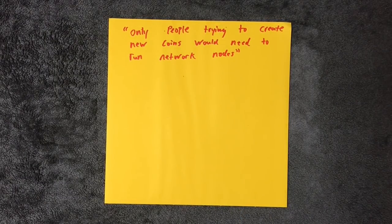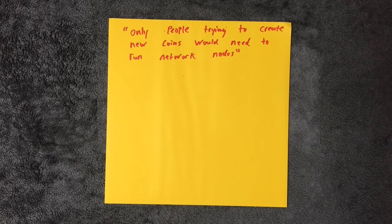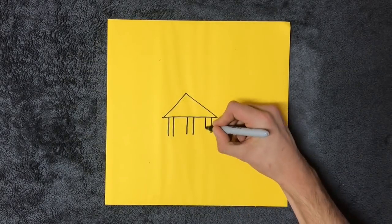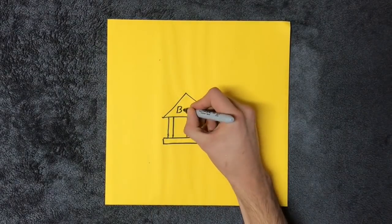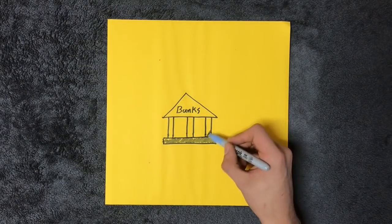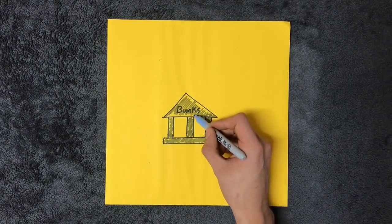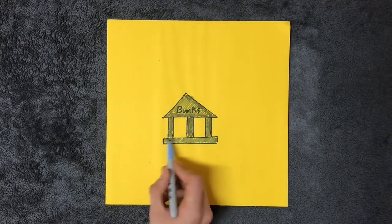People have been fed a lie that running these worthless nodes somehow does something good for the network. But why? One reason is that it gives the illusion of decentralization while contributing to the process of centralization via second layers. People are fighting tooth and nail to contribute to this system because they believe it's the right thing to do.